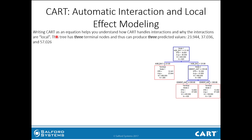Writing CART as an equation helps you understand how CART handles interactions, and it also helps you understand why the interactions are considered to be local. The tree on the right has three terminal nodes — terminal node 1, 2, and 3 — and it has three predicted values: 23.944, 37.036, and 57.026.